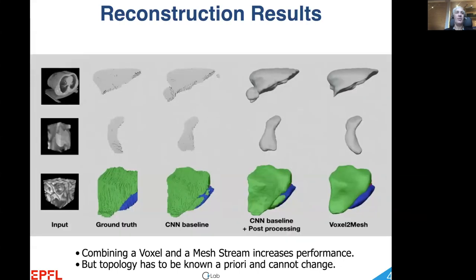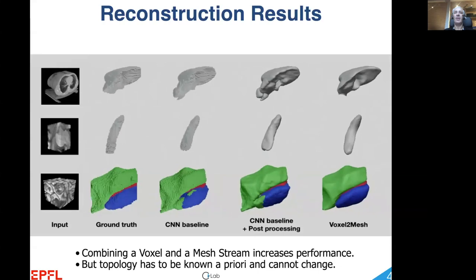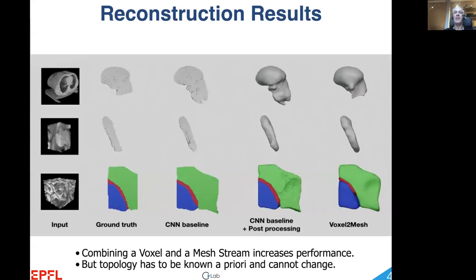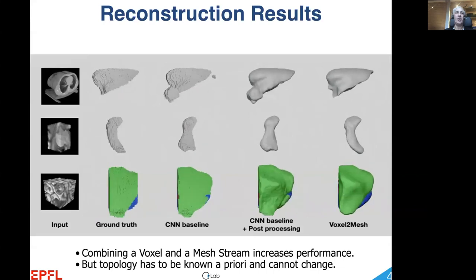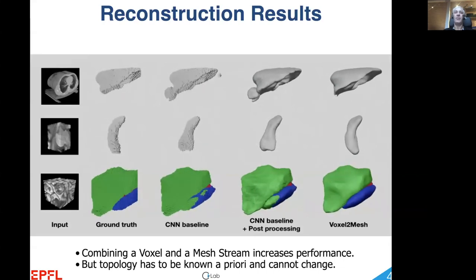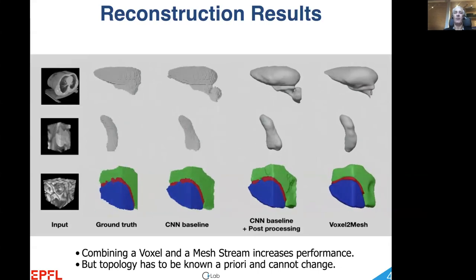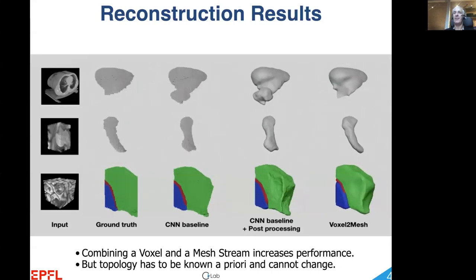This is a step in the right direction, but this approach still relies on deforming an initially spherical shape and can therefore not handle topology changes. It has long been known that a natural way to do so is to use an implicit surface representation instead of an explicit one.